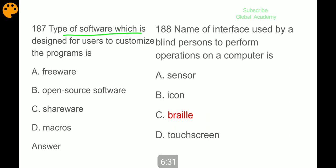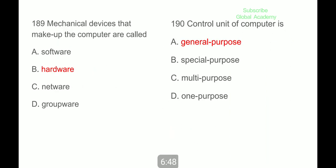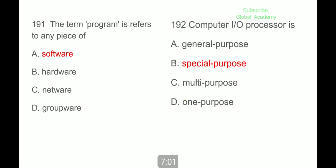Type of software which is designed for users to customize the program is freeware. Name of interface used by blind persons to perform operations on a computer is called Braille. Mechanical devices that make up the computer are called hardware. Control unit of computer is general purpose. The term program is referred to any piece of software. Computer I/O processor is special purpose.